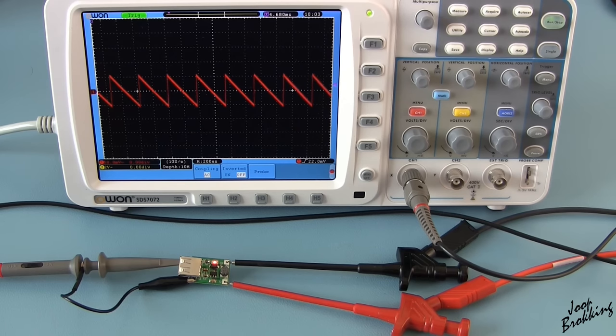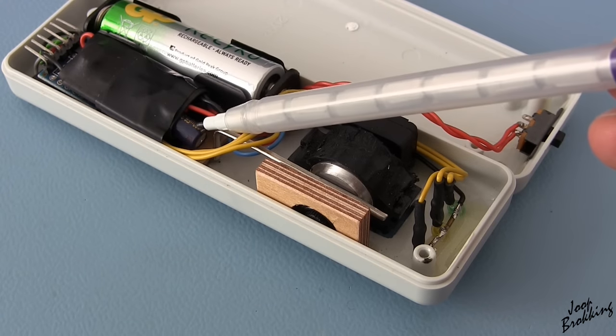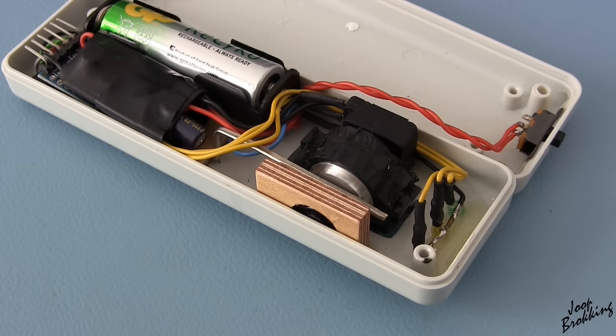The generated 5 volts from the voltage booster is pretty noisy as you can see on the oscilloscope. So there is a low ESR capacitor connected to the 5-volt output of the booster to reduce the noise.